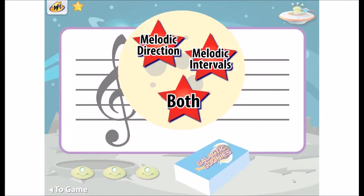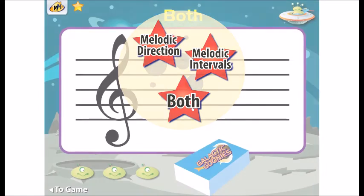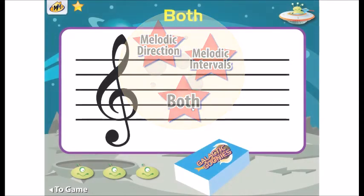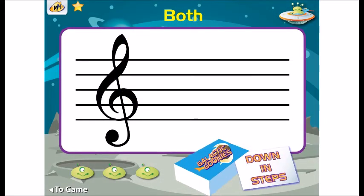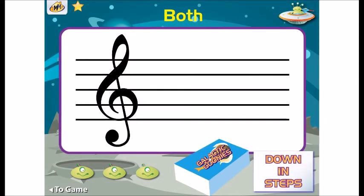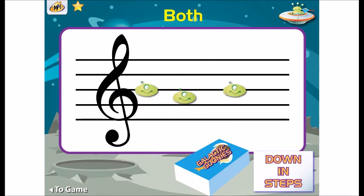Click Assessment to test your students' knowledge. This assessment gives you options so you can decide which concept to check. First, you'll click the deck to choose a card. Then move the alien heads to the staff and use them to show what the card says. Click on the alien heads to hear the notes and check your work.